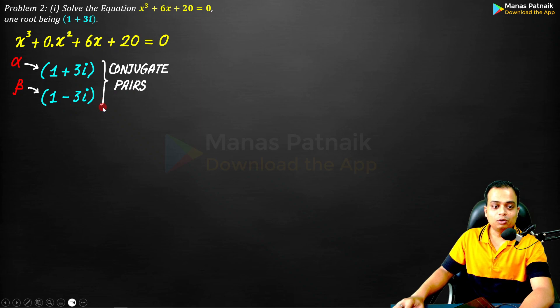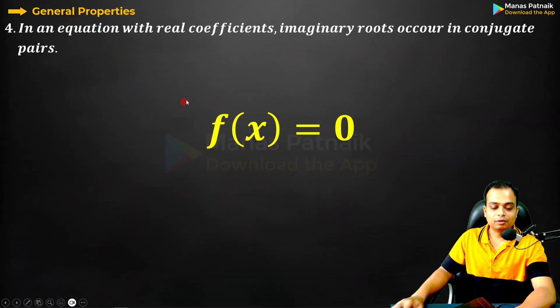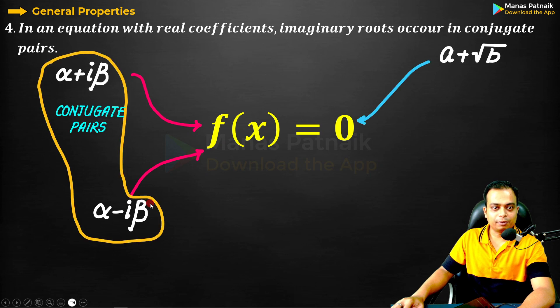As imaginary roots always occur in conjugate pairs, this is something we learned. If one root is α + iβ, the other root has to be α - iβ. This is what you call conjugate pairs.